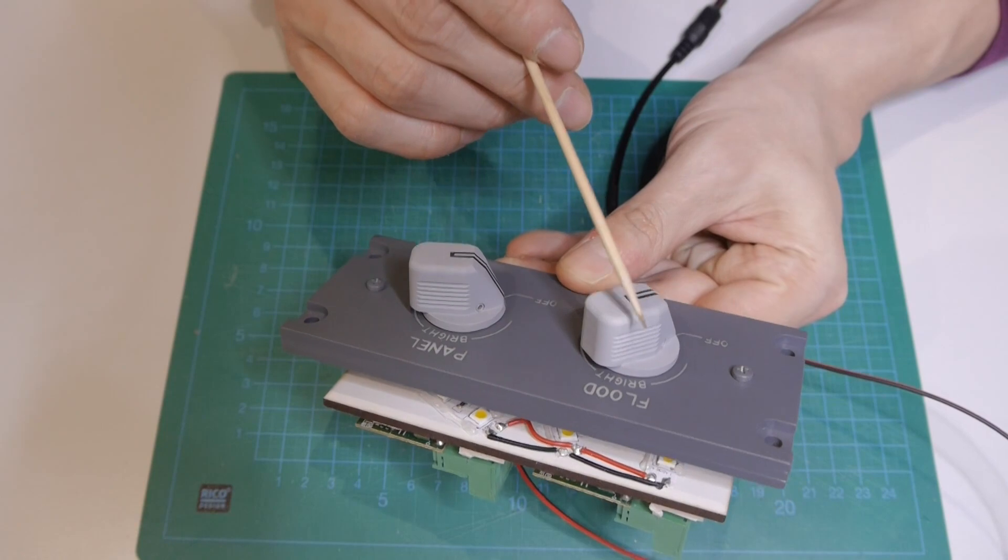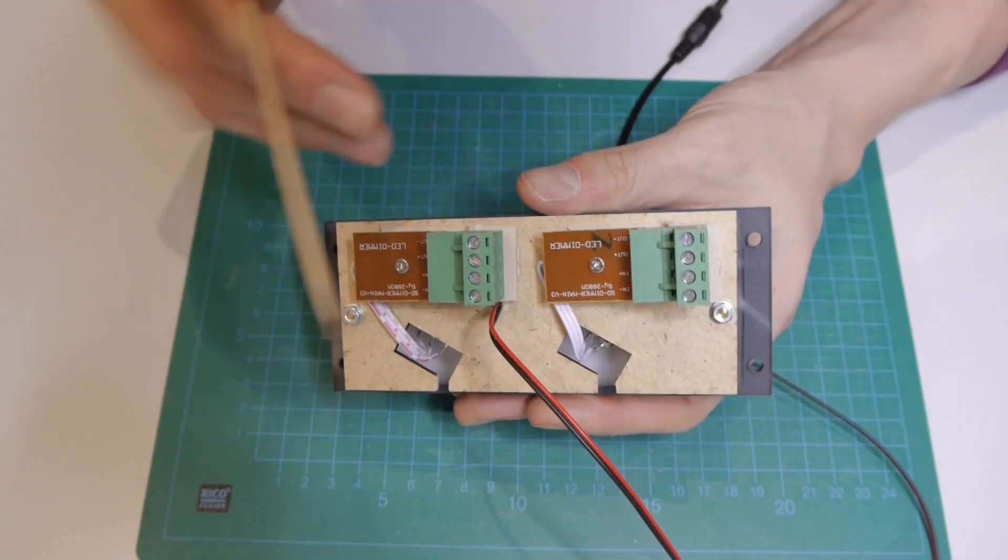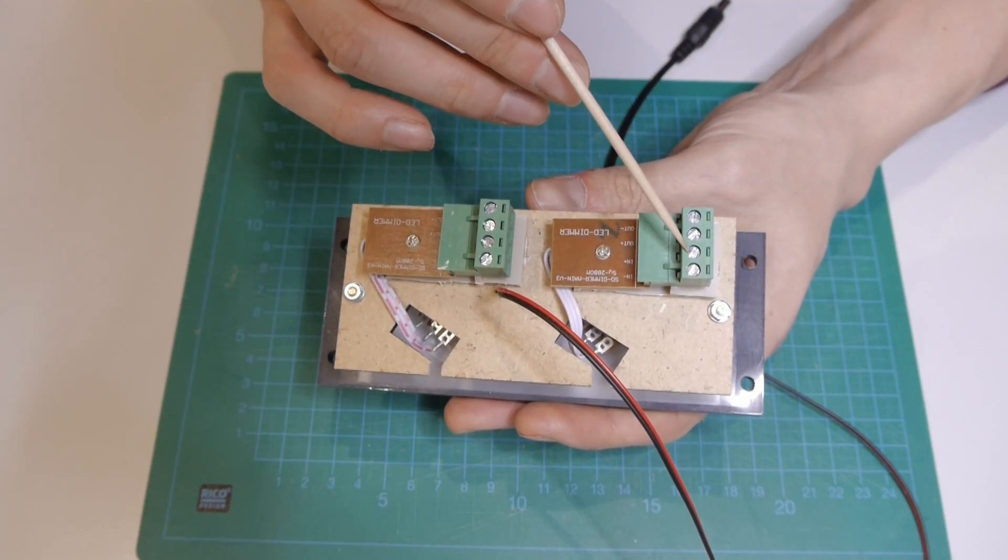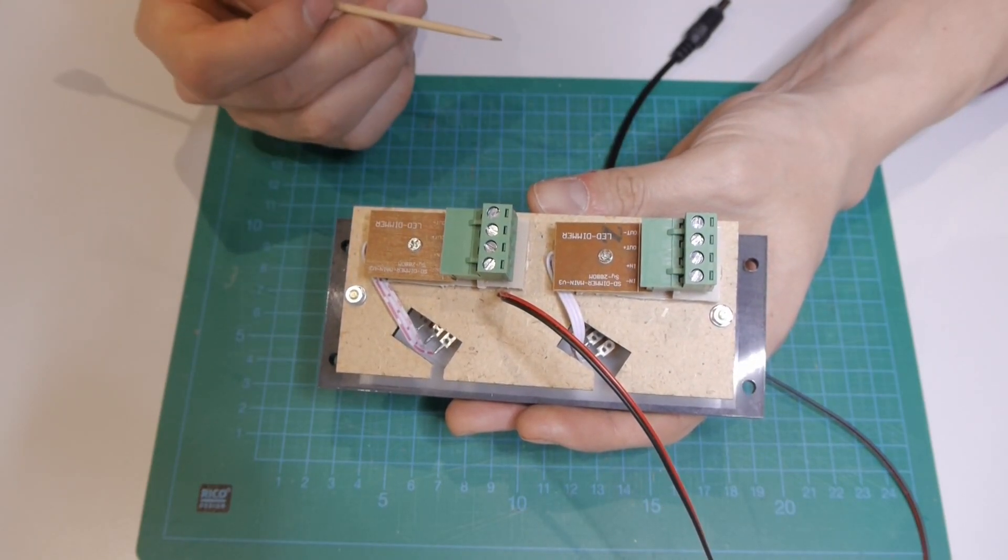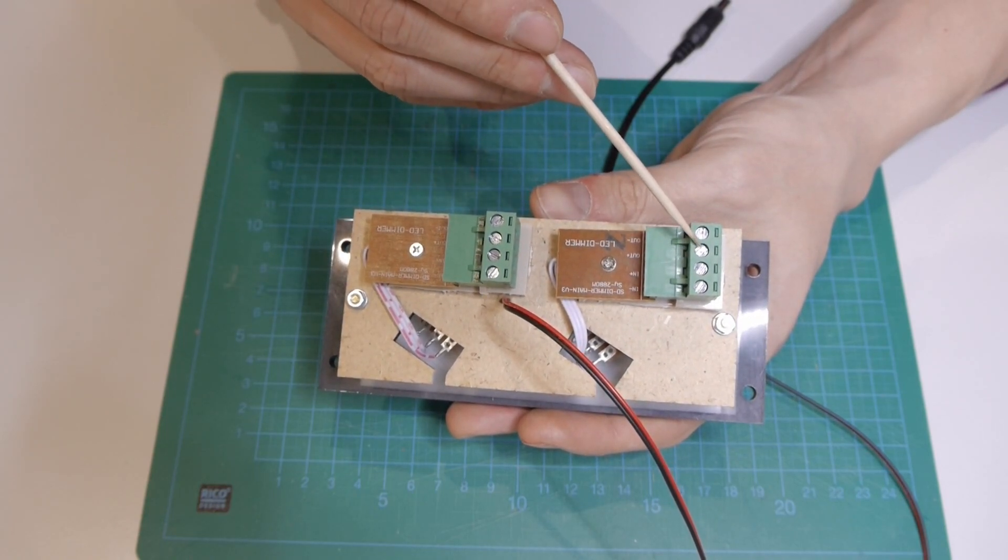So here we have the floodlight dimmer and the panel dimmer. Both dimmers will get a 12 volt connection from an external 12 volt power supply.